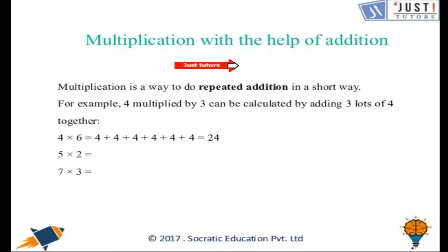Now let's learn how we can make multiplication with the help of addition. We can say that multiplication is repeated addition. Which means if we have 4 multiplied by 3, that can be calculated by adding 3 four times to itself. That is 3 lots of 4 together.